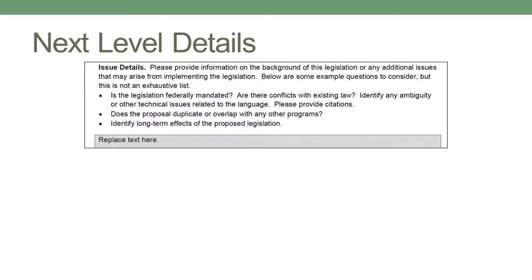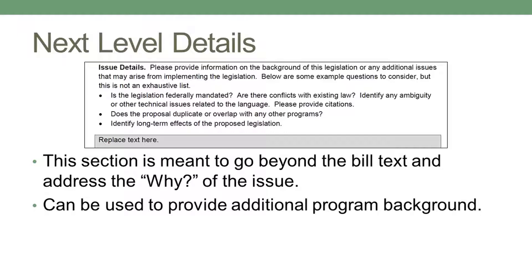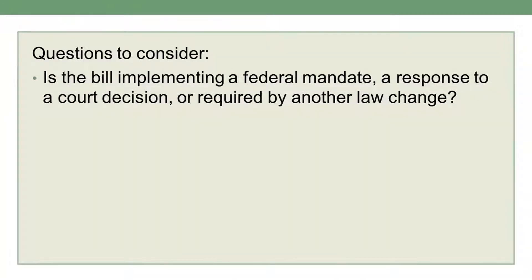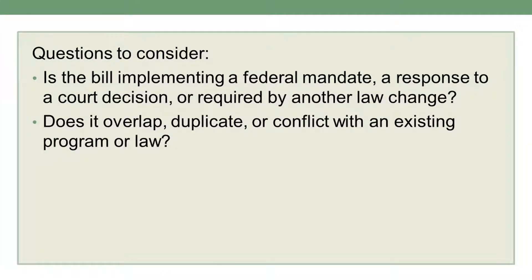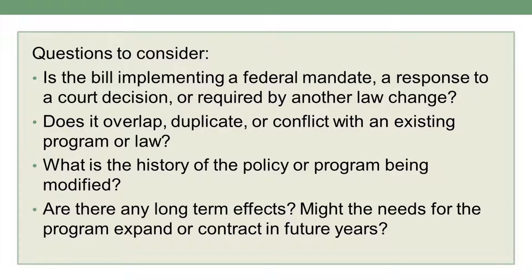The issue details section goes beyond the previous section of the form to give agencies the opportunity to provide additional information about the purpose of the bill. Some questions to answer here might include whether the legislation is required by a federal mandate or other law change, does it overlap or duplicate existing programs or law, what problems will it solve, and what is the history of those problems. Are there any long-term effects? Will the need for the legislation eventually expire? Will it create additional needs after a few years? This field can be an opportunity to inform your fiscal analyst of concerns that may need to be brought to the attention of legislators, even if they're not related to the fiscal estimate. On this and other sections of the form, please don't assume that your fiscal analyst already knows something. Although you may have already spoken to the analyst about the legislation, it is still helpful to have it all written in one document.